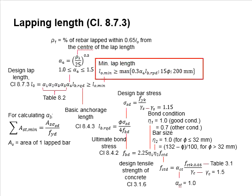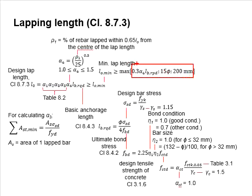Now we look into the minimum lap length required for lapping. It constitutes three main parts. The biggest value of three is adopted. The minimum lap length has to be greater than 200 mm or greater than 15 times the bar diameter or greater than 30% of the basic anchorage length times alpha 6.